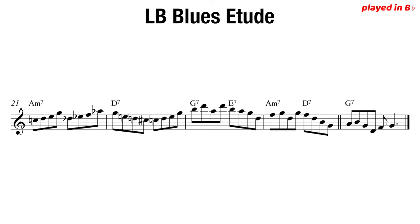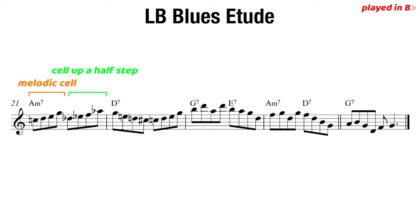The same thing happens at the end of the etude in measure 21, where that same cell is played up in half steps from C and then from D-flat. This is a cool way of adding sequences to our chromatic cells. Playing these in major thirds is cool, minor thirds is cool, circle of fourths, and playing chromatically like we have here in this etude.